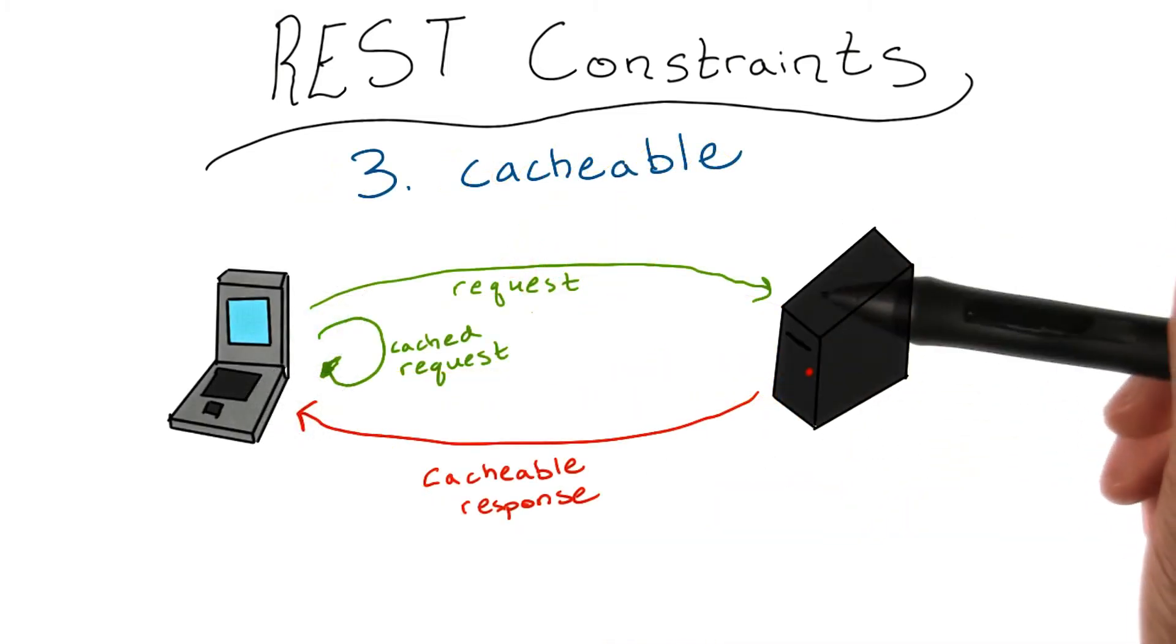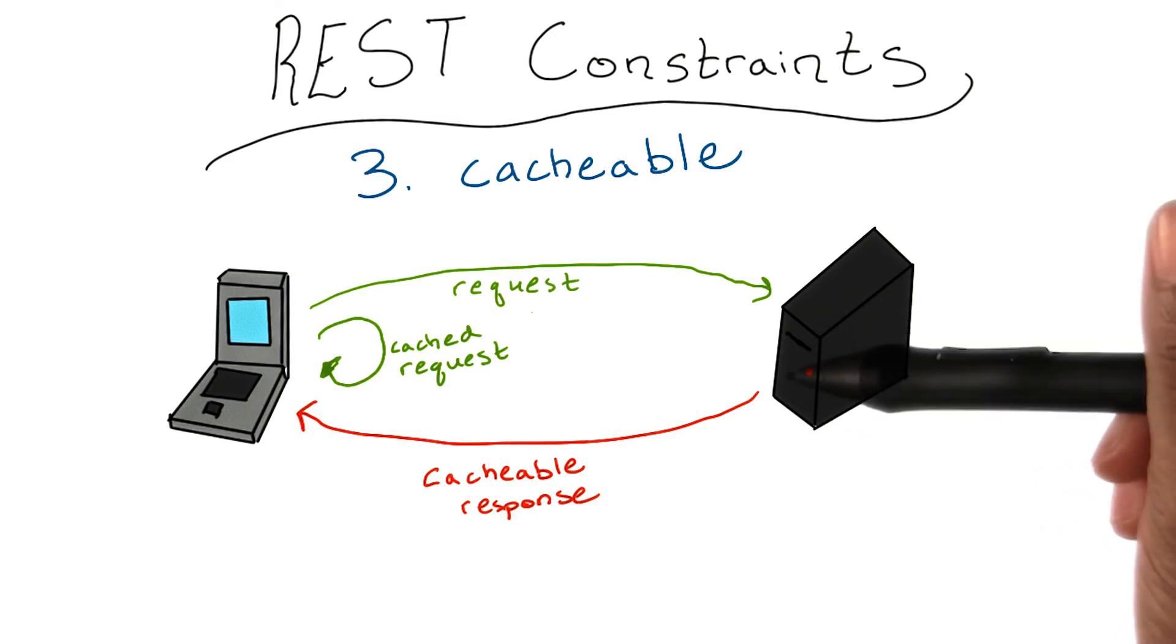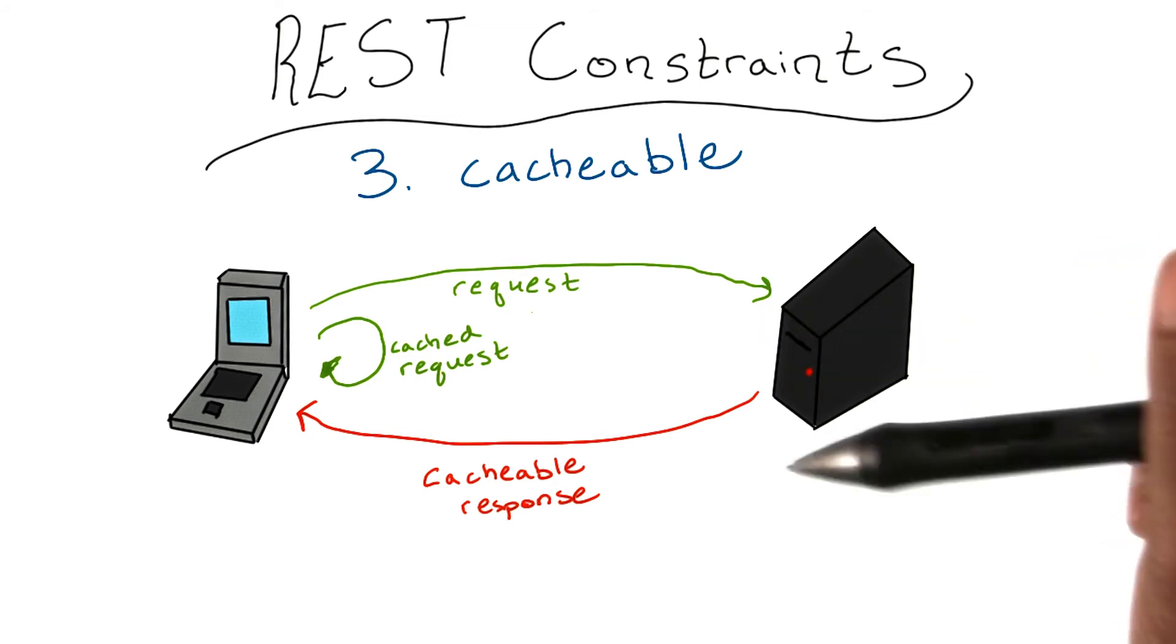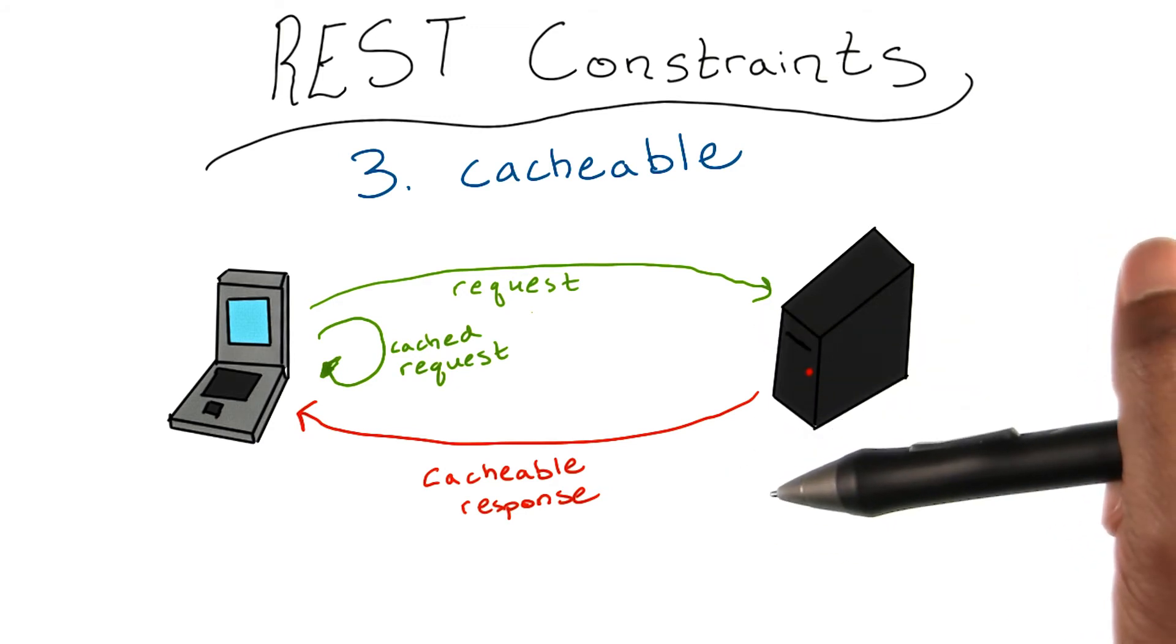Response messages from the server to the client are explicitly labeled as cacheable or non-cacheable. This way responses can be cached by the client if the information on the server hasn't changed since the last request.